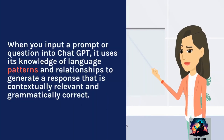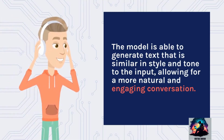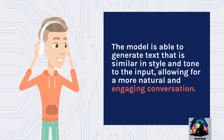When you input a prompt or question into ChatGPT, it uses its knowledge of language patterns and relationships to generate a response that is contextually relevant and grammatically correct. The model is able to generate text that is similar in style and tone to the input, allowing for a more natural and engaging conversation.